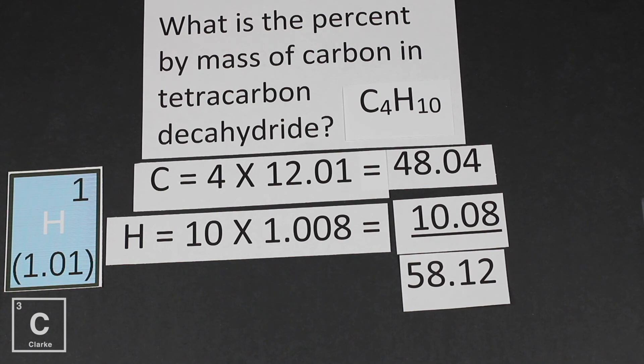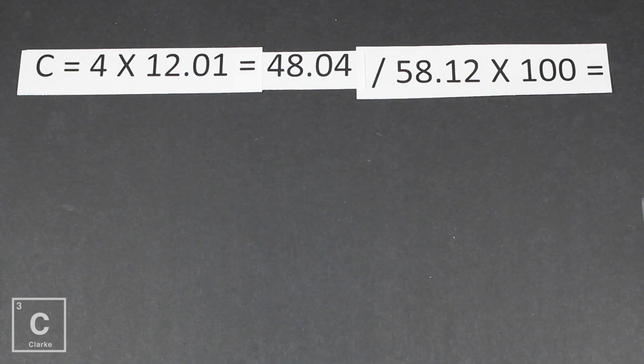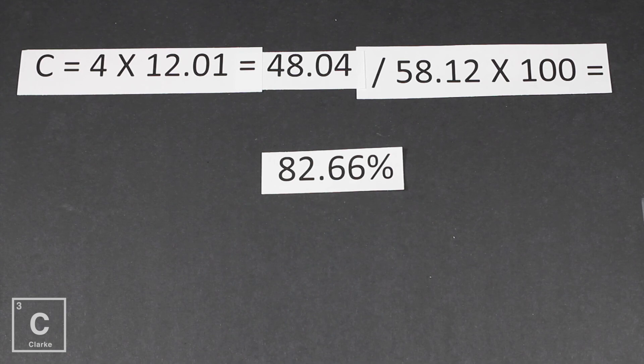Now remember, it's the part divided by the whole. We just want to know about carbon. So we're going to take our 48.02, and we're going to divide it by that total mass, 58.12. Again, we can just multiply that by 100 to get a percent. And so we're going to get 82.66. Tetracarbon decahydride, 82.66% of that compound is made up of carbon.